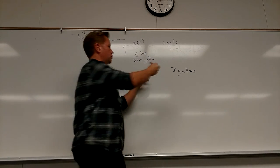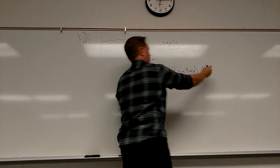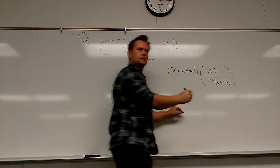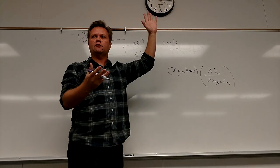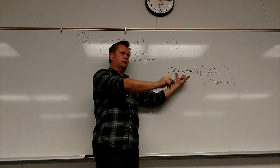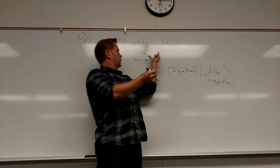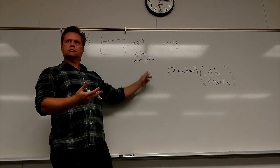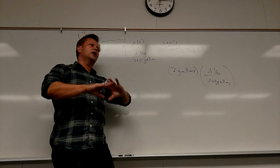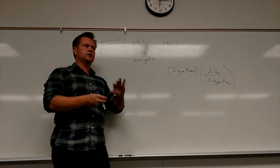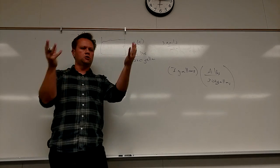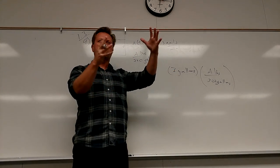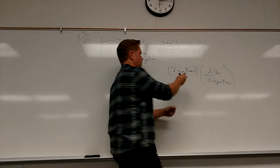A nice way to think about this problem is you're converting three gallons that I'm losing to pounds of salt. How do I convert gallons to pounds of salt? You multiply three gallons by A pounds per 300 gallons. That's my gallons of water to salt pounds conversion.